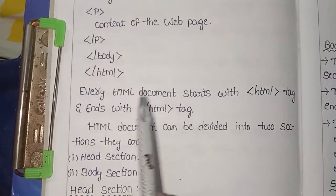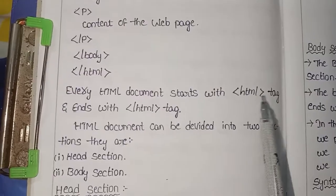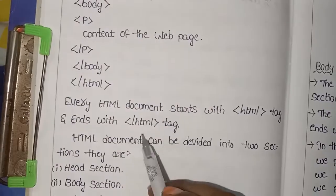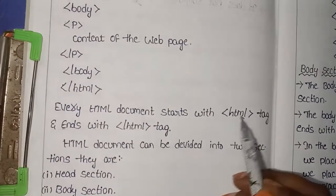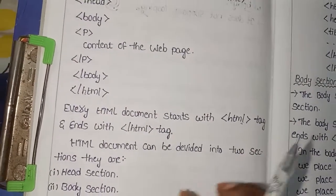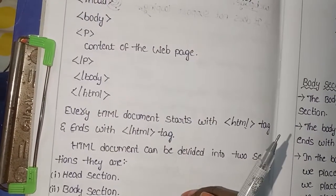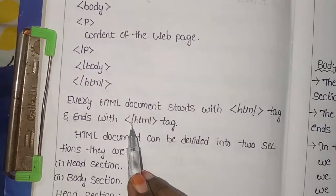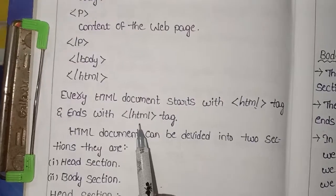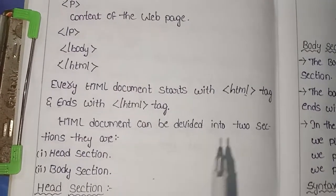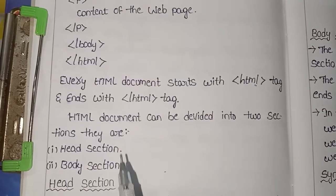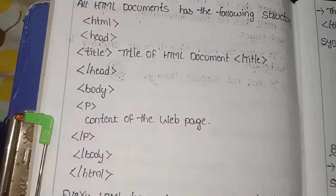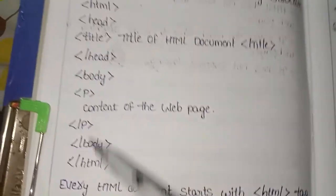Every HTML document starts with the HTML tag and ends with the HTML tag. An open tag uses two angular brackets, and a closing tag starts with a forward slash inside angular brackets. HTML documents can be divided into two sections: the head section and the body section.